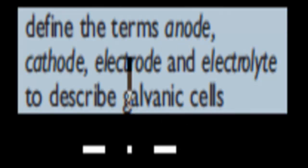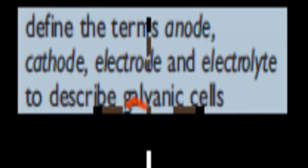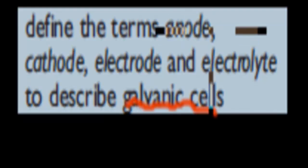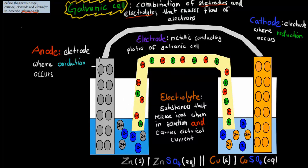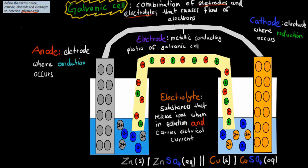We'll start with the actual big word — the galvanic cell — and what the definition of the galvanic cell was, and then we'll cover the other words afterwards. So a galvanic cell was a combination of electrodes and electrolytes that cause a flow of electrons. The whole thing itself was the galvanic cell — our zinc and copper electrodes, and our electrolyte solutions, plus the salt bridge, and the wires — all of that combined is a galvanic cell because it causes the flow of electrons.